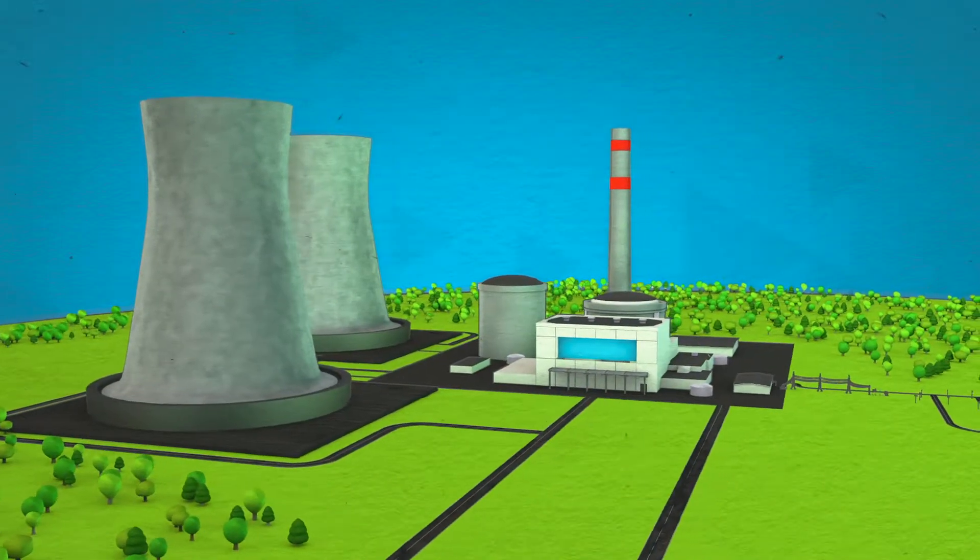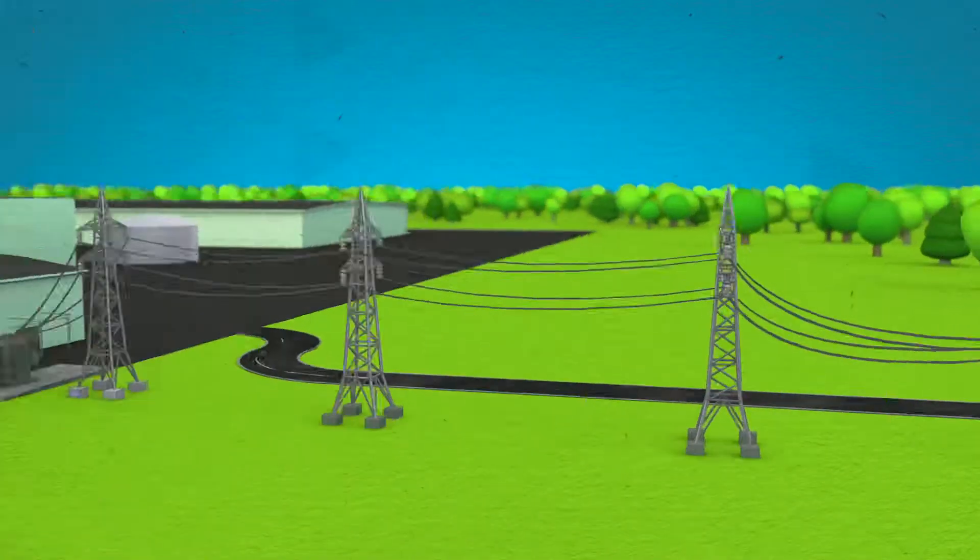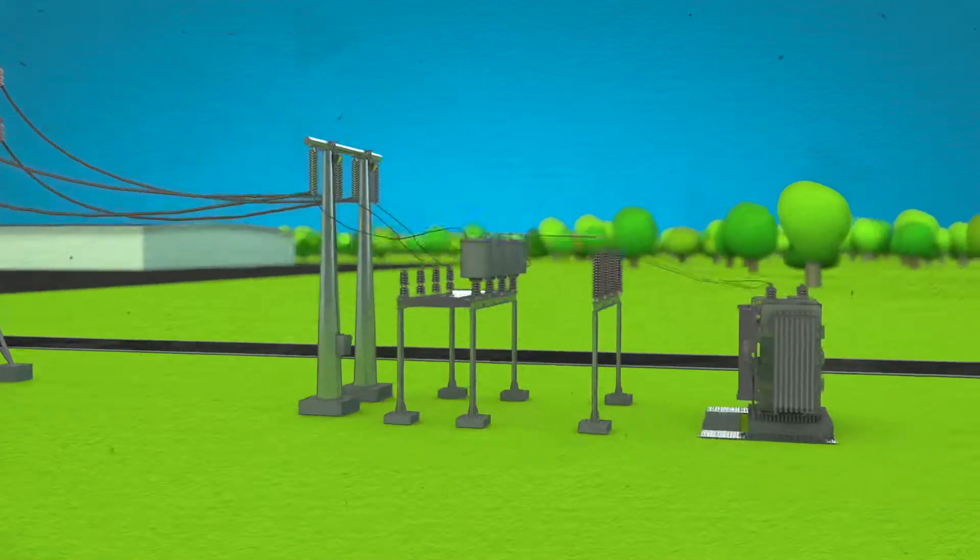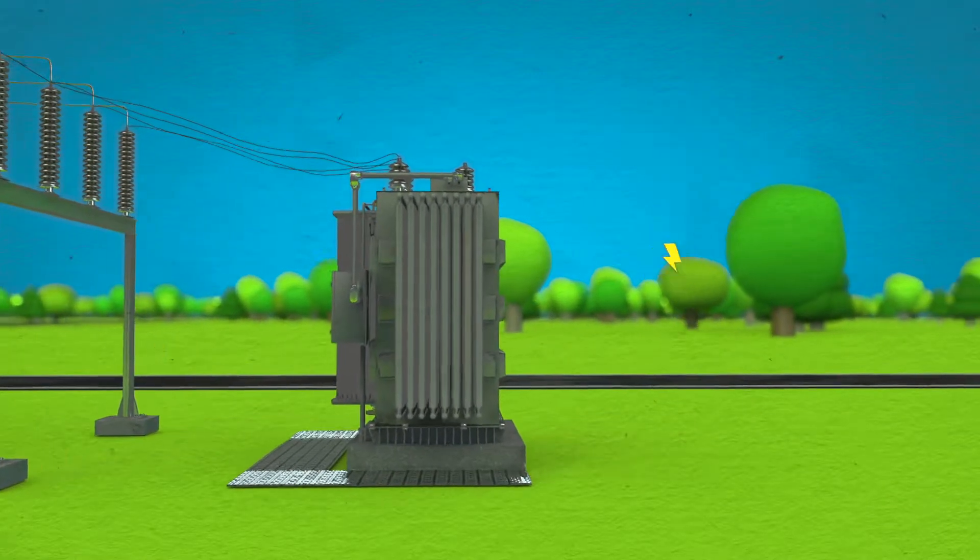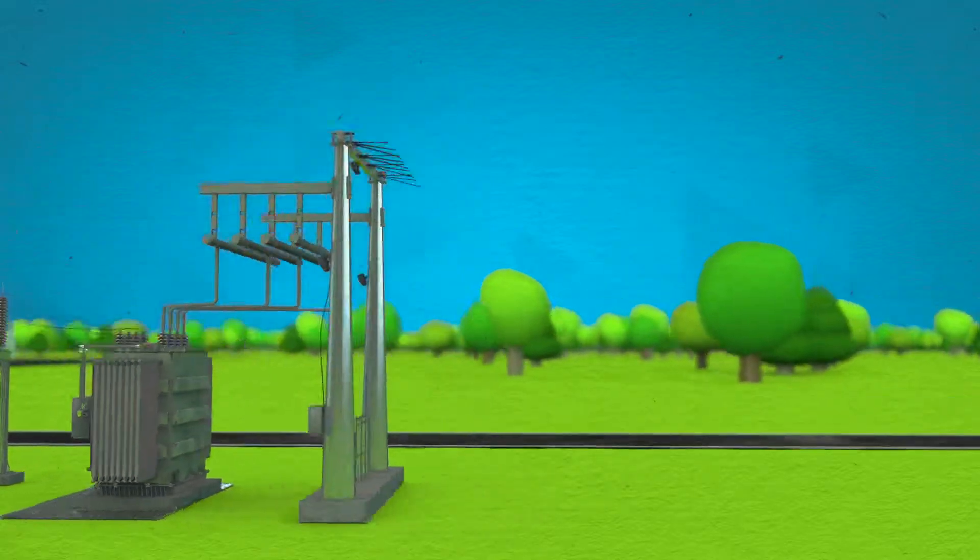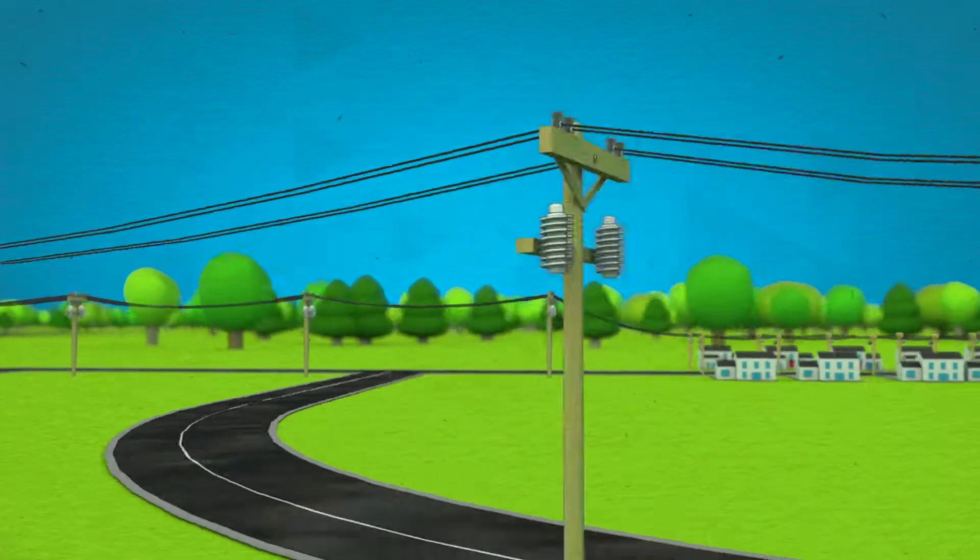The electricity travels from our plants over very large transmission lines to neighborhood substations. These substations lower the voltage so the electricity can be easily used in your home, and then they distribute it over large lines to surrounding neighborhoods.